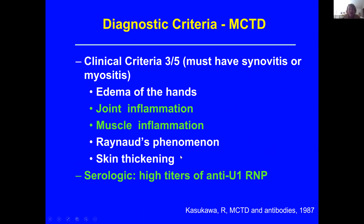Then there was a try to come up with a simpler definition. Again, diagnostic criteria required synovitis or arthritis and/or myositis, plus different issues including swelling of the hands, joint inflammation, muscle inflammation. And again, you had to have a high titer of this antibody, anti-U1RNP.